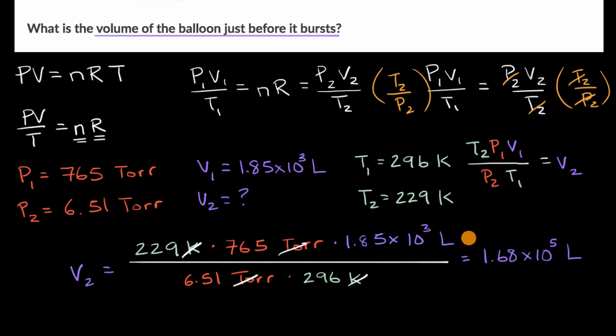And I always like to do a nice intuition check. Does that make sense? So our starting volume was 1,850 liters. And then our volume got a lot larger because we're going to a much higher altitude. And that does make intuitive sense to me.